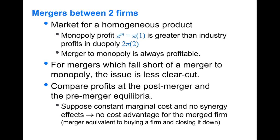If there are only two firms in the industry, it's very easy to see that a merger between these two duopolists is profitable. The monopoly profit — denoted π_m or π with one firm in the industry — is greater than the total profits with two firms. So if monopoly profit is larger than twice the duopoly profit, the merger to monopoly is always profitable.